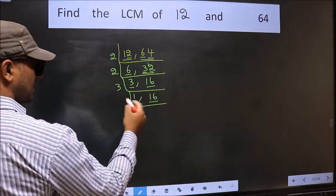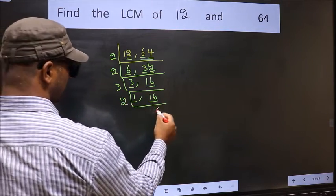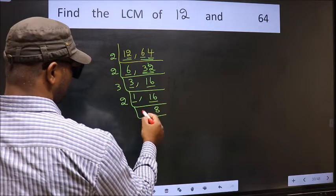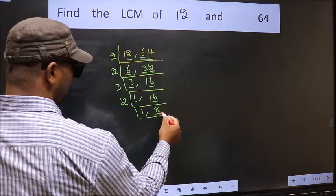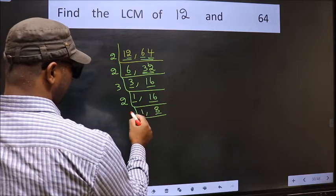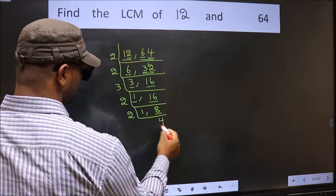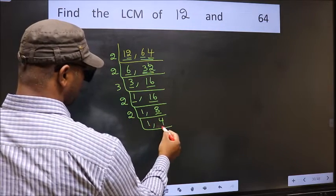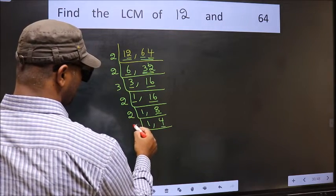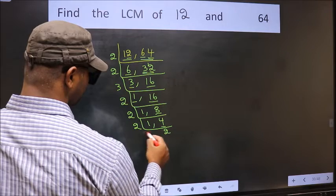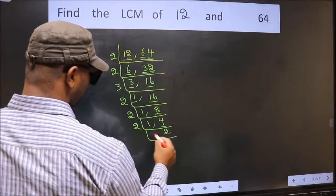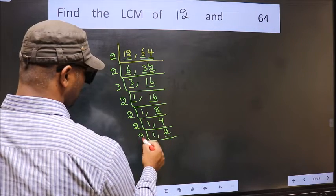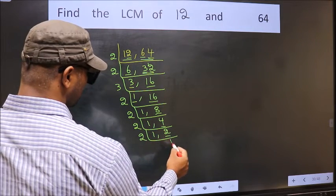16 divided by 2: 2, 8, 16. Now 8 — 2 times 4 is 8. Now 4 — 2 times 2 is 4. Now we have 2, which is a prime number, so 2 times 1 is 2.